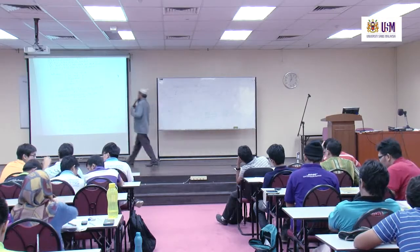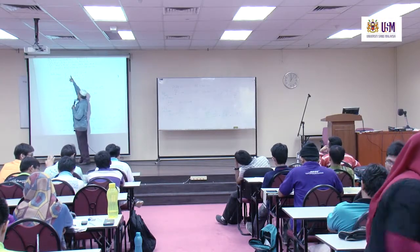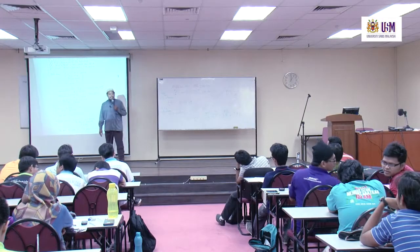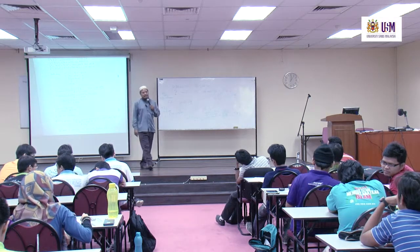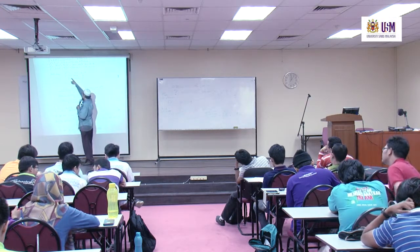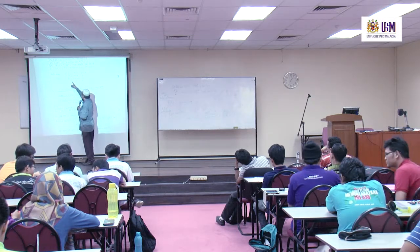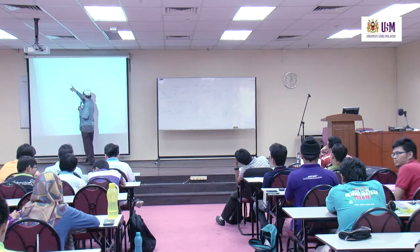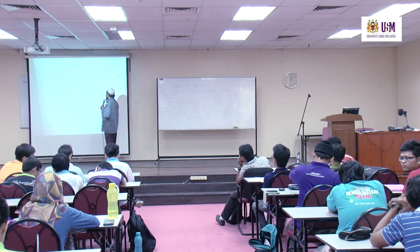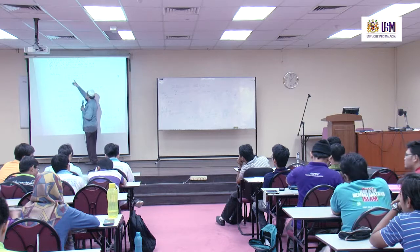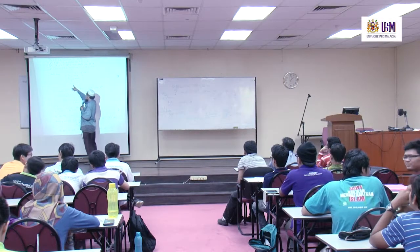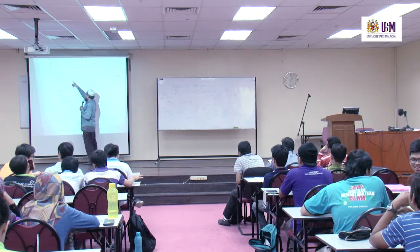Once you build the Routh array, look at the first column. For the system to be marginally stable — which is what we need when finding the imaginary axis crossing — you need to equate rows containing parameter K to zero. Setting one row equal to zero gives K = 50, and setting another gives K = 81.5 × 17.5.